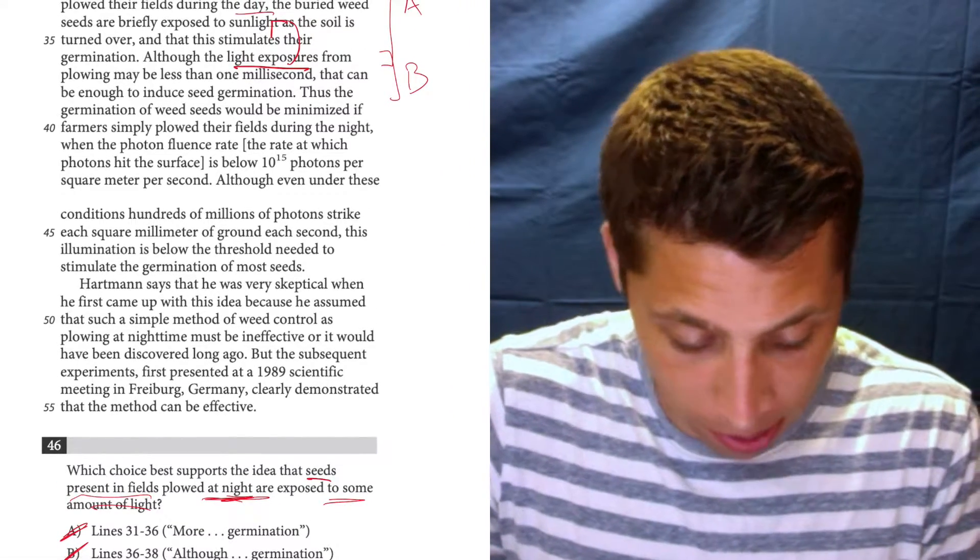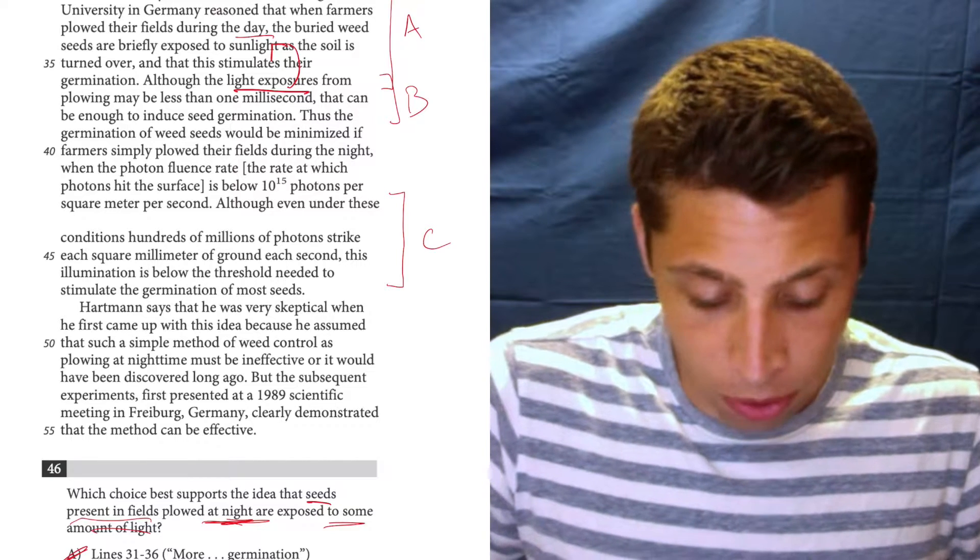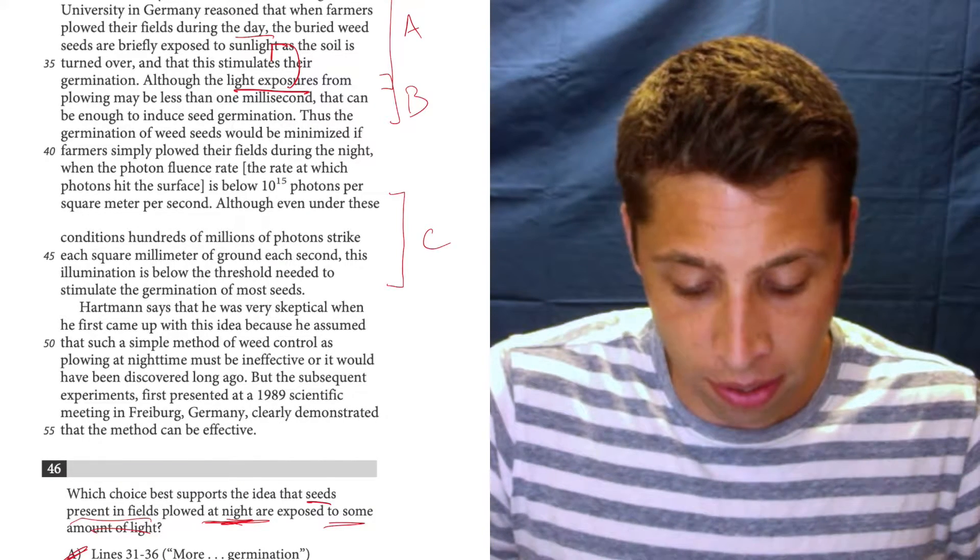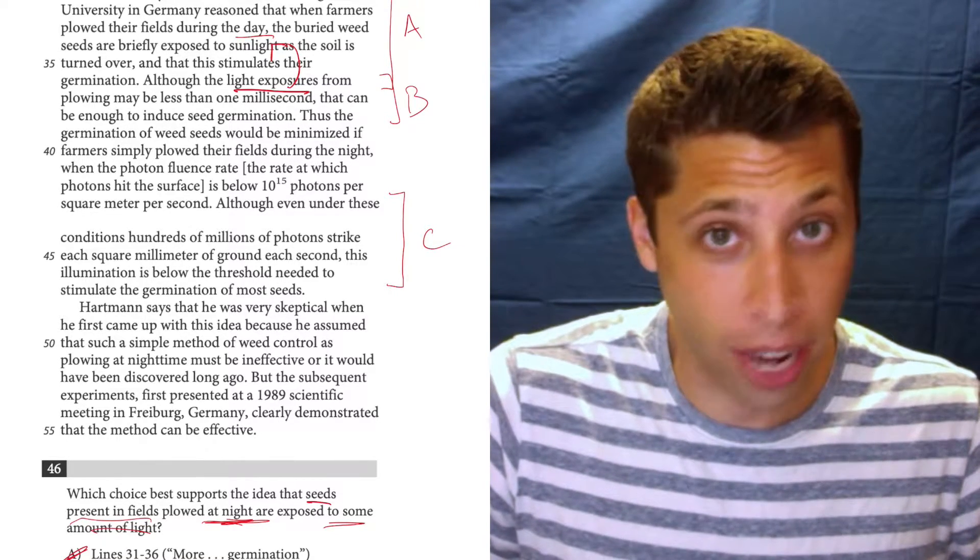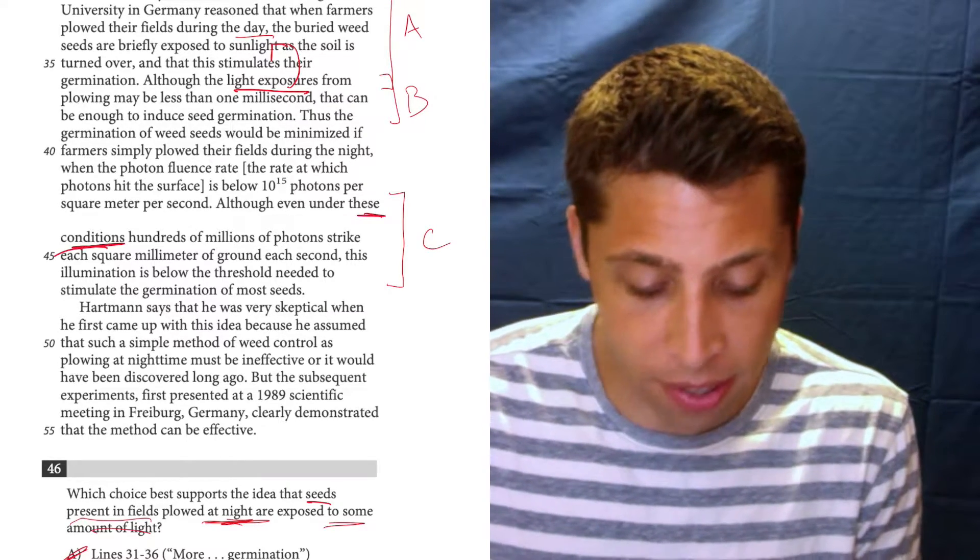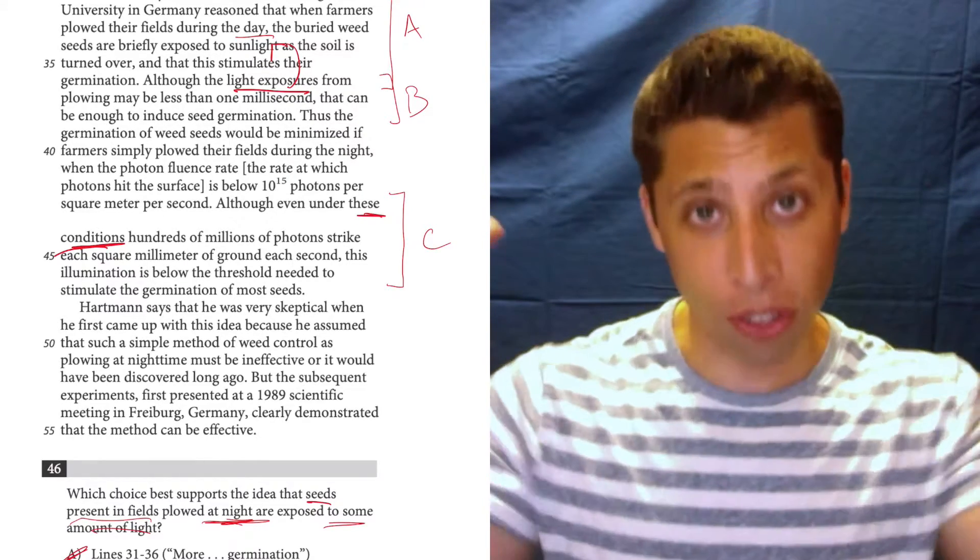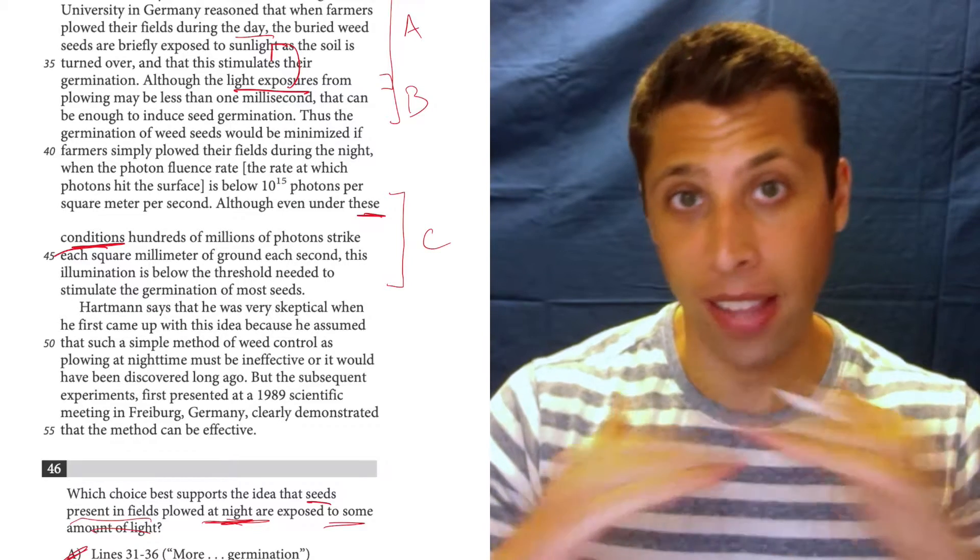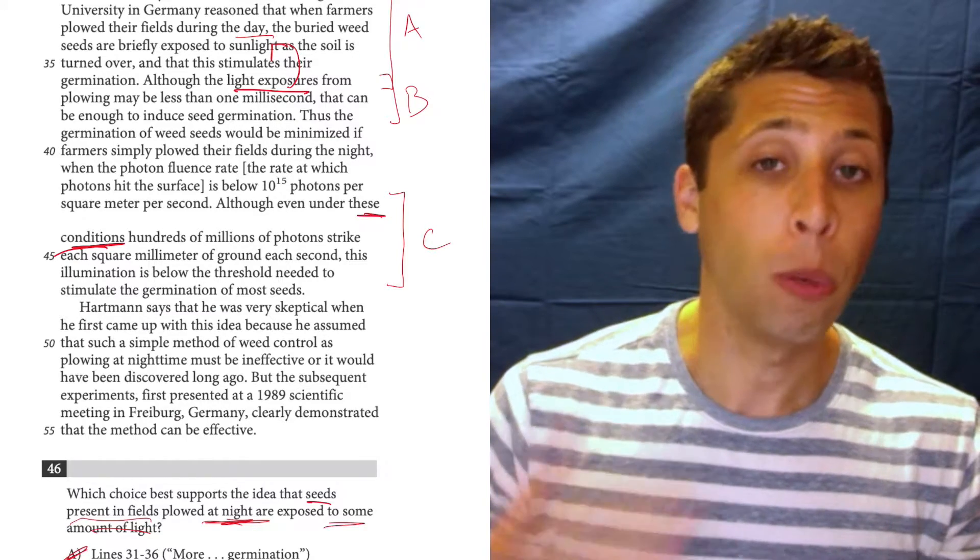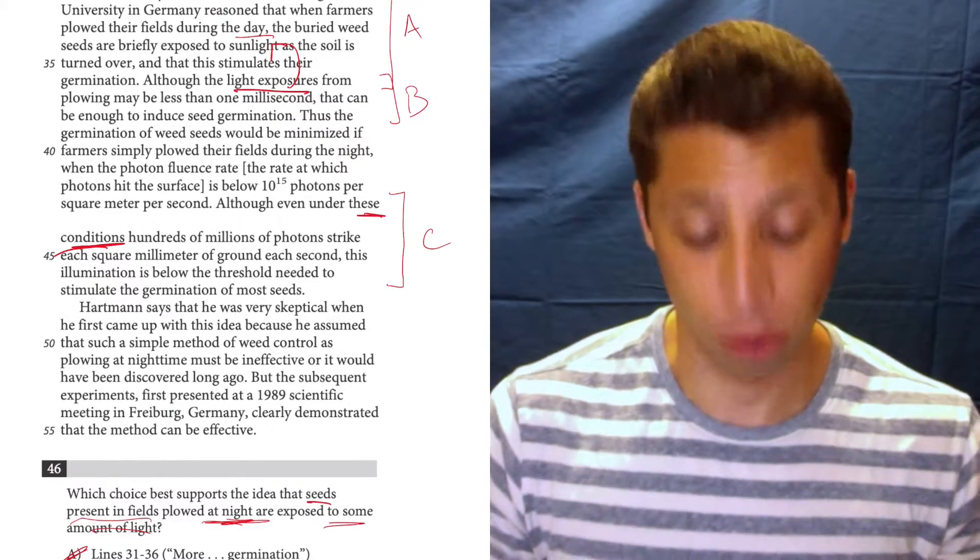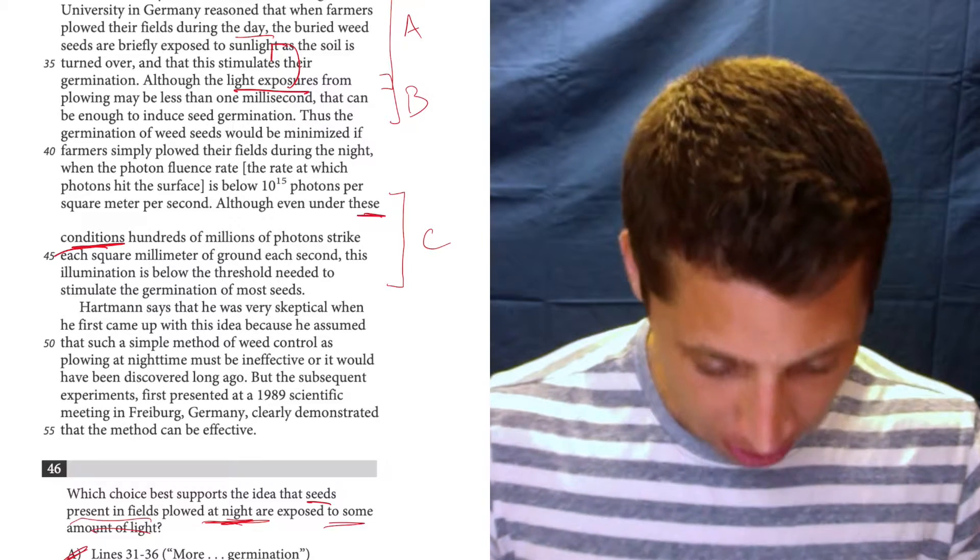43 to 47 is down here. Although even under these conditions, hundreds of millions of photons strike each square millimeter of ground each second, this illumination is below the threshold needed to stimulate the germination of most seeds. Well, this doesn't talk about night or day. And in fact, this is one of those cases where I would want to read beyond the line reference. Normally for evidence questions, we can just stick to the lines that they give us and that's it. But if there's something in those lines that's unclear, like in this case, a pronoun, we should read and try to make sure we understand what they're referring to. So I want to know what are these conditions? Are they day conditions or are they night conditions?